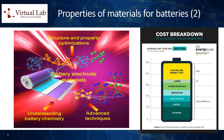Fourth, conductivity: the ability of a material to conduct electricity is critical. This includes both electronic conductivity — the ability to move electrons — and ionic conductivity — the ability to move ions. Both of these are important for the efficient operation of batteries.